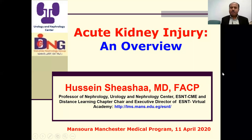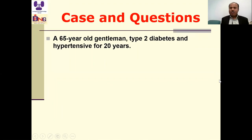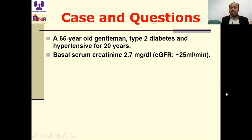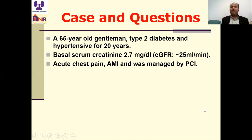Good morning. Today I'm going to speak about acute kidney injury, one of very important topics in nephrology. Let me start the presentation with this virtual case. A 65-year-old gentleman who has a prolonged history of type 2 diabetes and hypertension for more than 20 years. His baseline serum creatinine is 2.7 mg/dL with estimated GFR based on CKD epidemiology equation about 25 mL/min. He presents to the emergency department with acute chest pain proven to be due to acute myocardial infarction, and the management was primary coronary intervention.